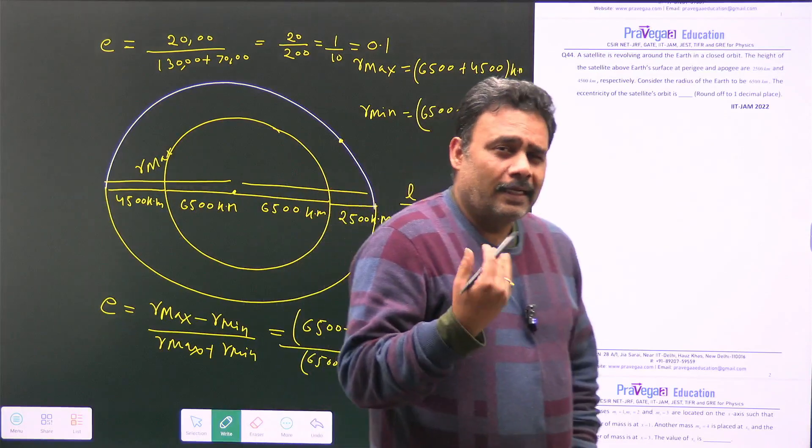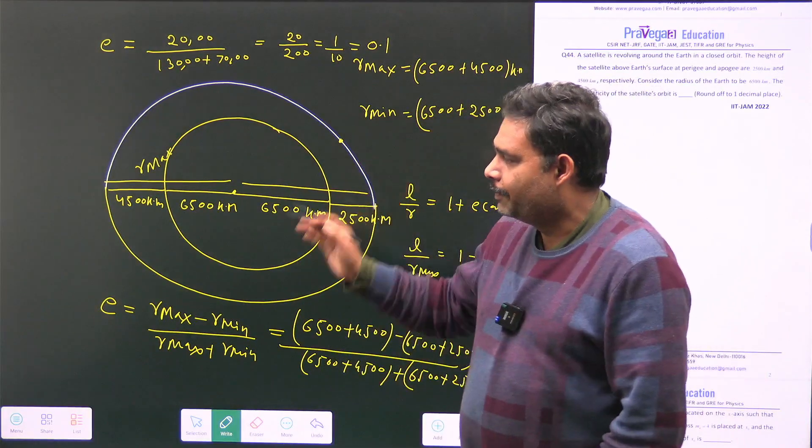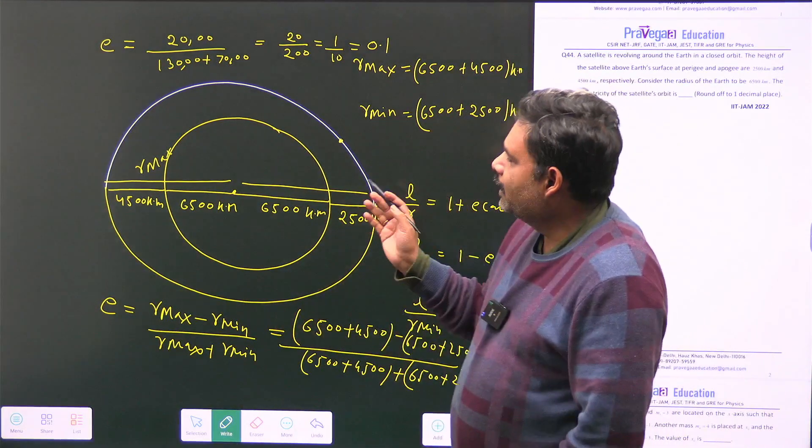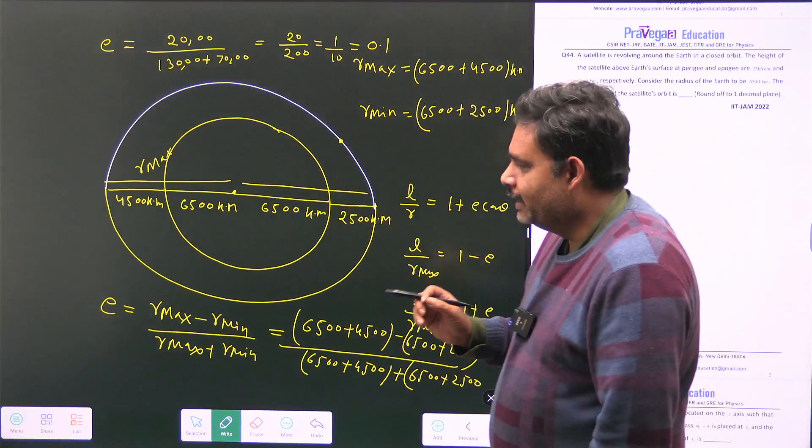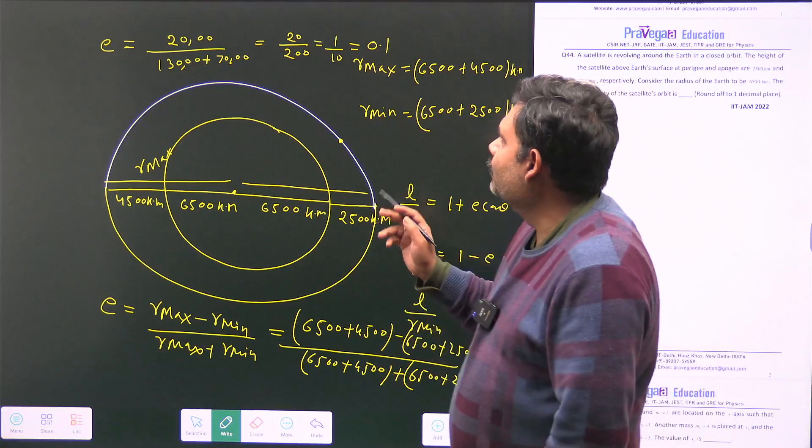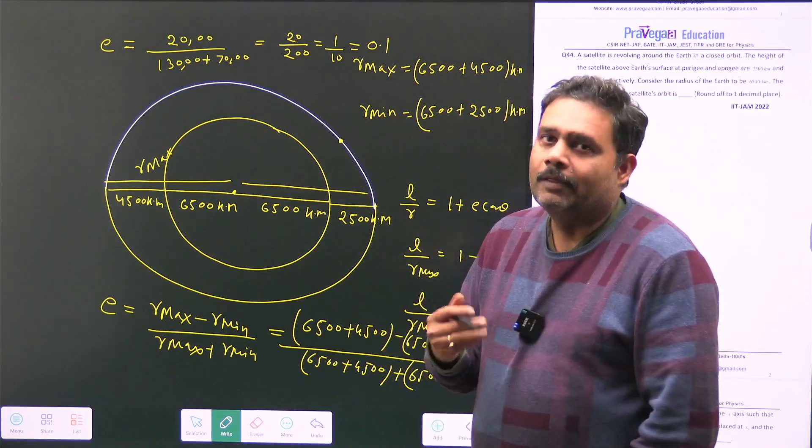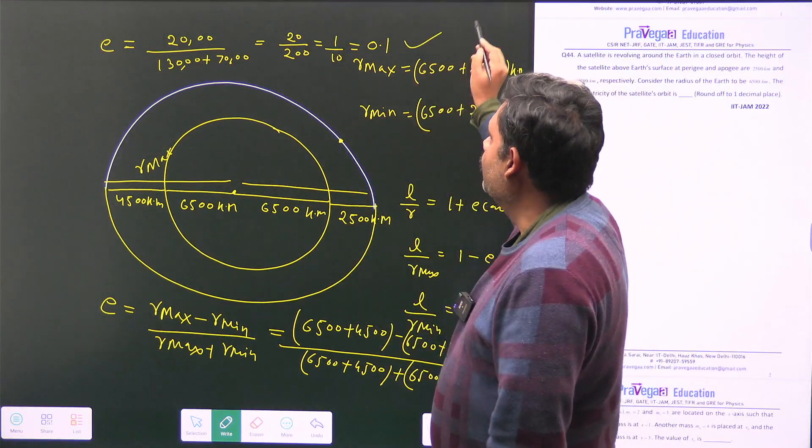Obviously, if in the Kepler, we assume that this is for the Kepler's problem, so obviously when we are doing for the Kepler problem, then eccentricity for the elliptical orbit must be between 0 to 1. So that must be a fraction. And yes, that value is a fraction.